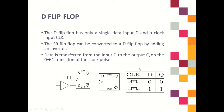Based on this truth table, when the clock changes from 0 to 1 and your D value is 0, Q will follow the value of D. So when D is 0, Q is equal to 0. When D is 1, Q is equal to 1. This is the simple operation of D flip-flop.